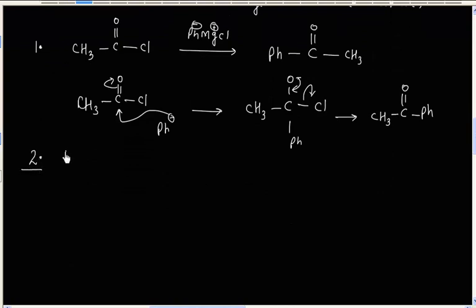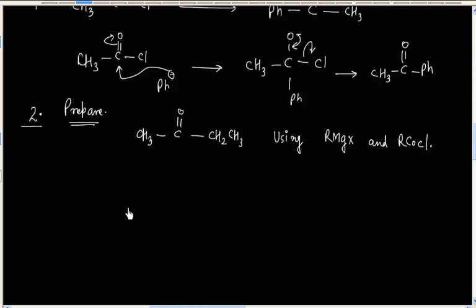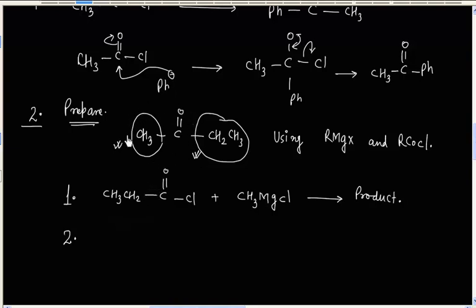One can be asked this kind of problem: prepare CH₃C(=O)CH₂CH₃ using Grignard reagent and acid halide. We have two options. We can take one part as the Grignard reagent or the other part as the Grignard reagent. If we take CH₃ as the Grignard reagent, then the acid chloride should be CH₃CH₂COCl and the Grignard reagent will be CH₃MgCl, giving the desired product. Alternatively, we can take the other group as Grignard reagent, in which case the other part should be the acid halide, again giving the desired product.